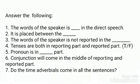At last, let us have a small recap. First: the words of the speaker are quoted in direct speech and reported in direct speech. Second: the actual words of the speaker are placed between inverted commas. Third: the words of the speaker are not reported directly in indirect speech. Fourth: tenses are changed in both the reporting part and the reported part — True. Fifth: the pronoun is in the reported part. Sixth: the conjunction comes in the middle of the reporting part and the reported part — True. Seventh: time adverbials do not come in all sentences — No, the time adverbials won't come in all sentences.